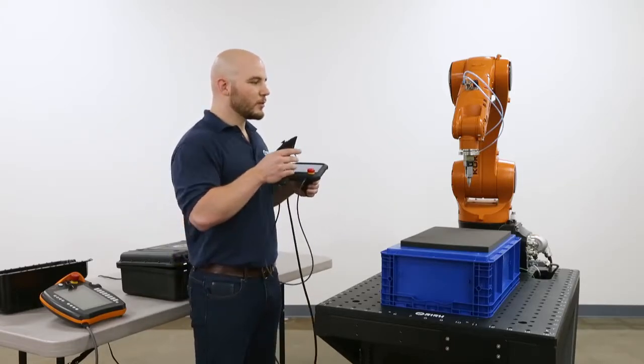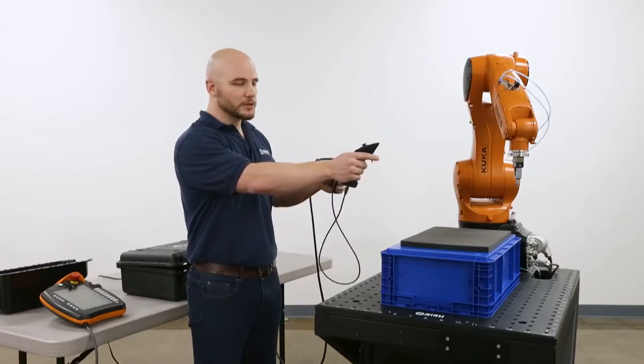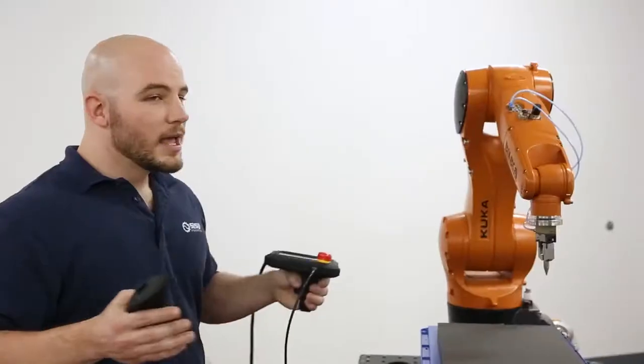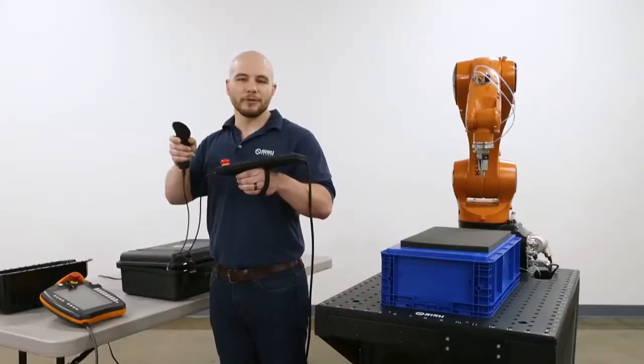If I stand facing the system and I want the end effector to go away from me, I push it away. If I want it to come closer, I pull it closer. It really doesn't matter how I'm oriented, the robot will follow. I never have to think backwards.